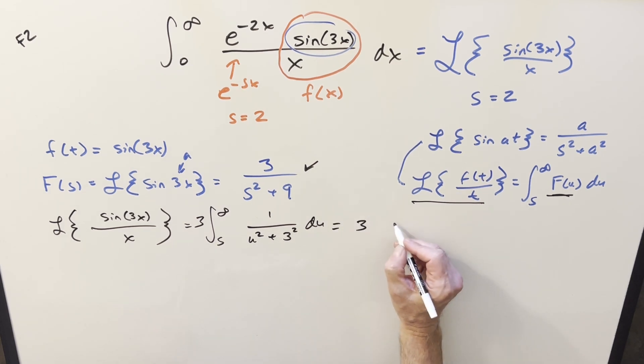So then integrating this, this is going to become 3 arctan of just u over this, so u over 3. And we're going to have a 1 over 3 in front. Do it like that. And we just need to evaluate from s to infinity. Well then I can cancel the 3s right here.